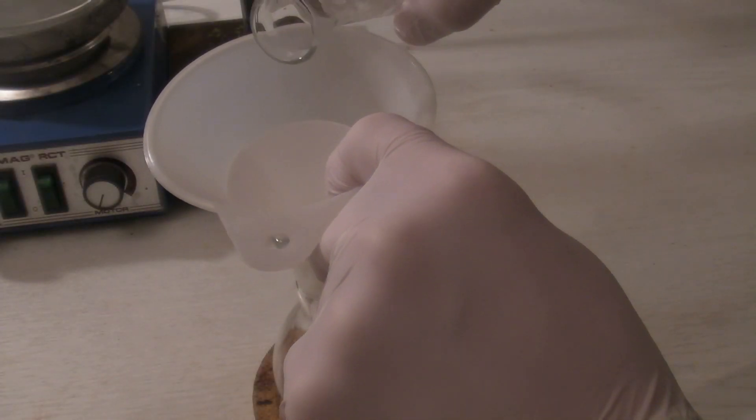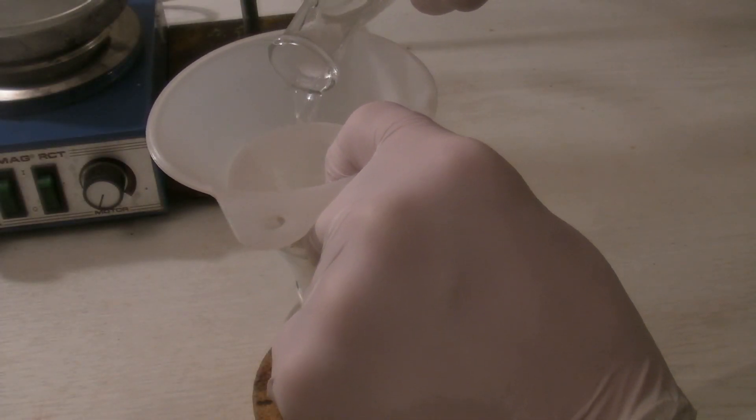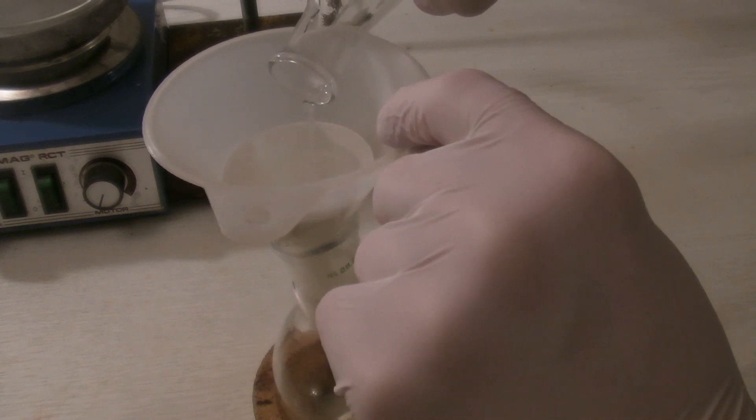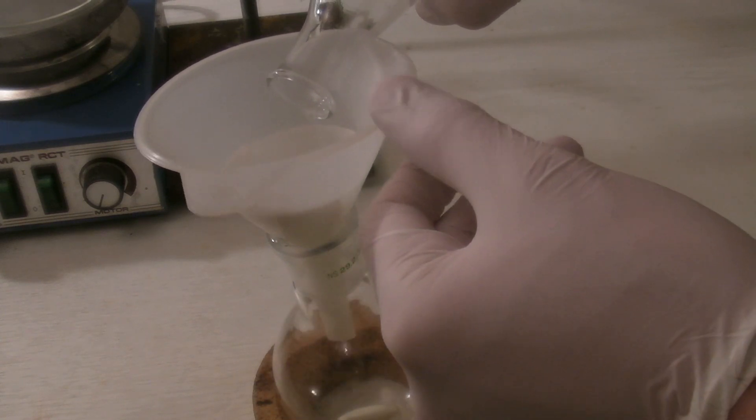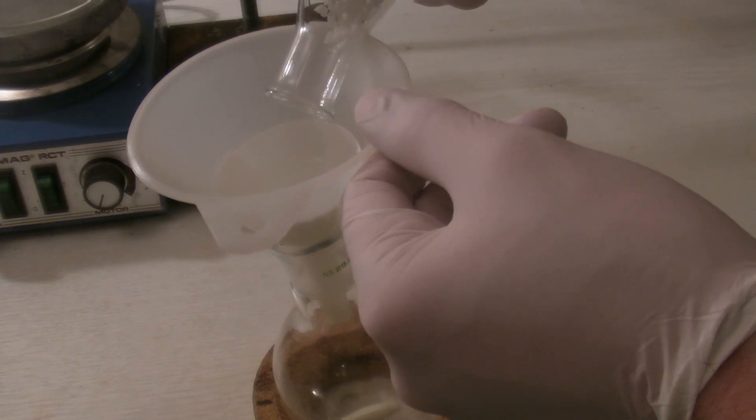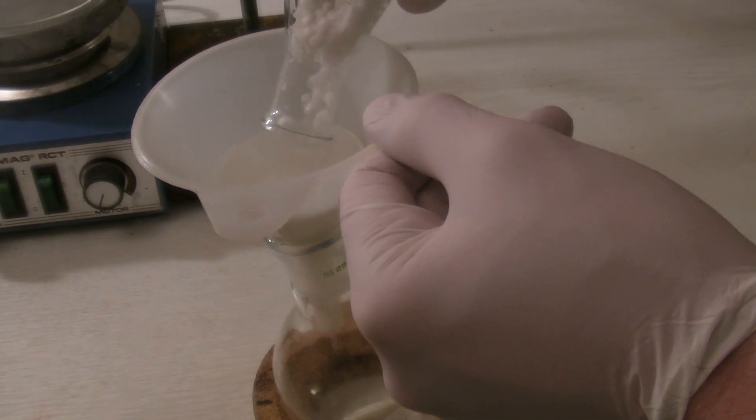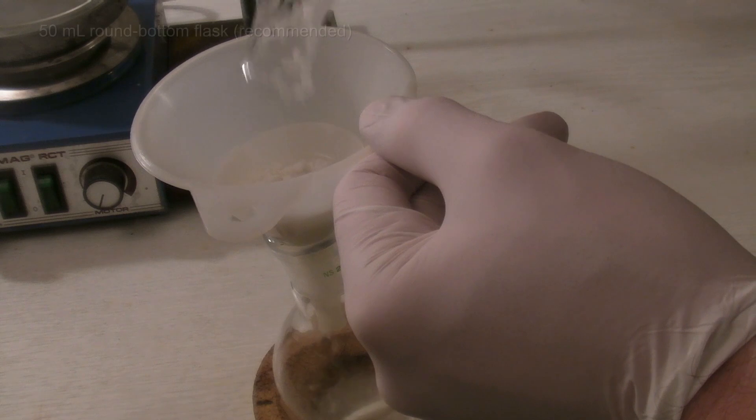Then the calcium chloride was filtered off and the filtrate added directly to a round bottom flask. A 250 ml flask was used because a smaller one was not available, but a 50 ml flask would be better.